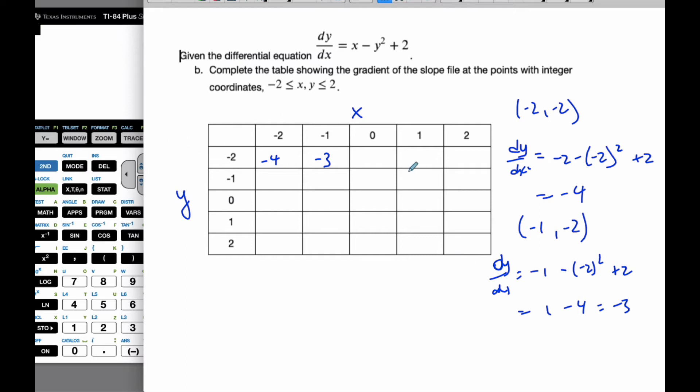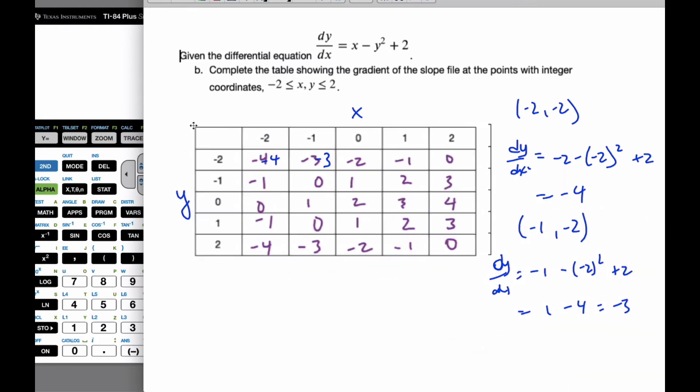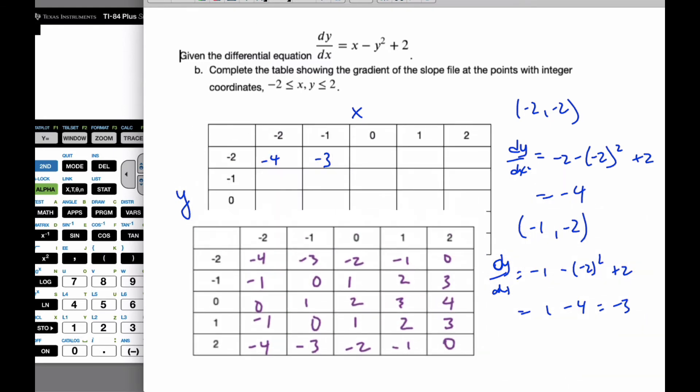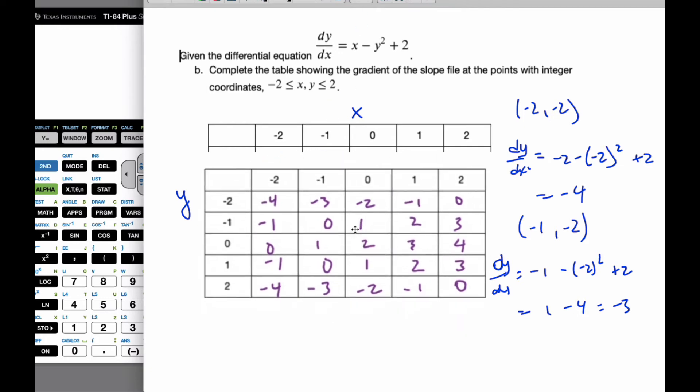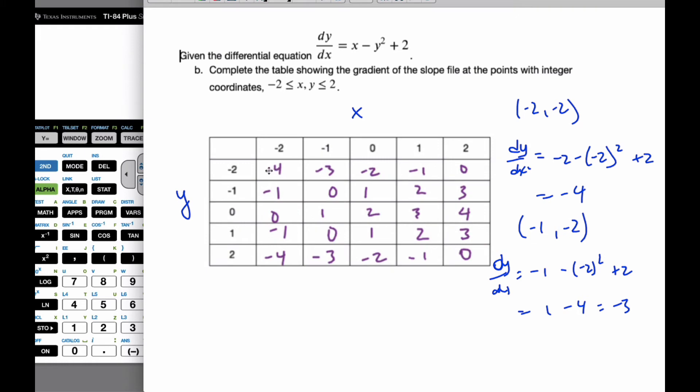And when you go and do that for all of them, you end up with this particular table here. So I see where the table is. This is what I'm going to get. And so I get certain patterns. And oftentimes patterns come out. So it makes life a little bit easier to work through. But you can go through and find all these. And there is our table to help find the slope field at the points.